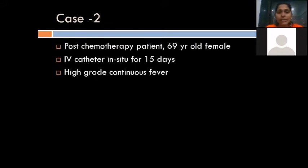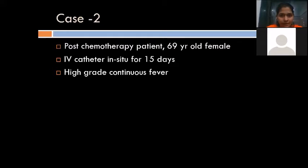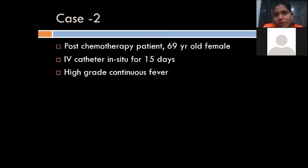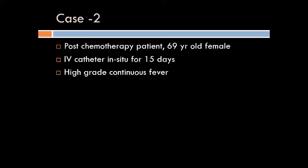Case 2 is a post-chemotherapy patient, a 69-year-old female. She has an IV catheter in situ for almost 15 days and complains of high-grade continuous fever. This is a bloodstream infection — when you have high-grade fever and an in-situ IV catheter for a long time, it definitely indicates bloodstream infection.